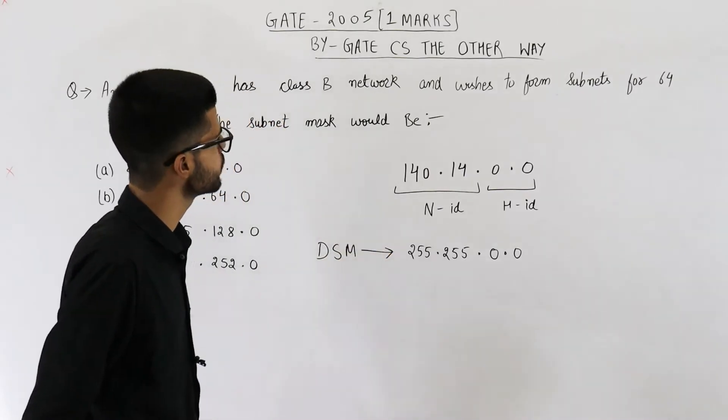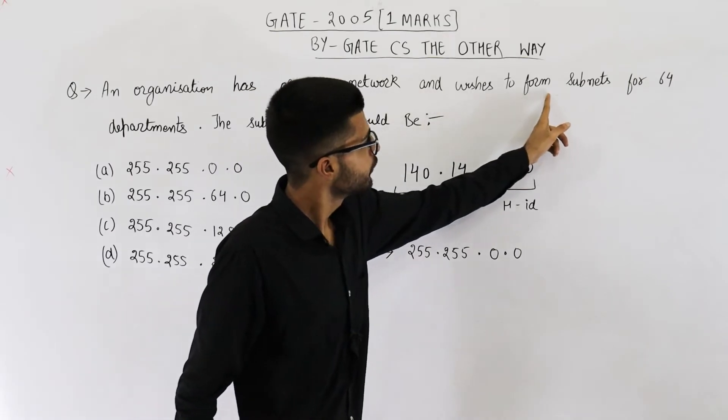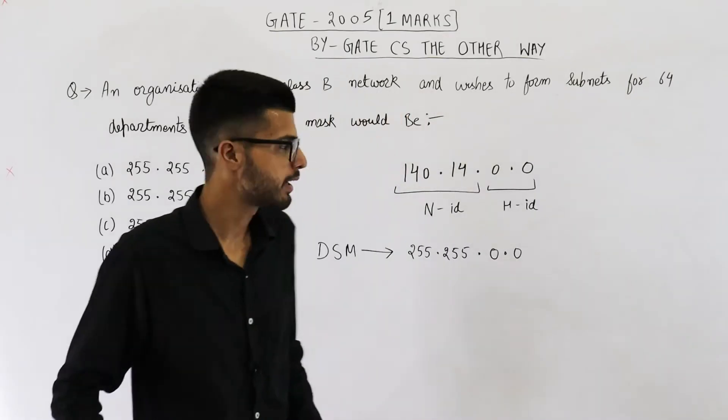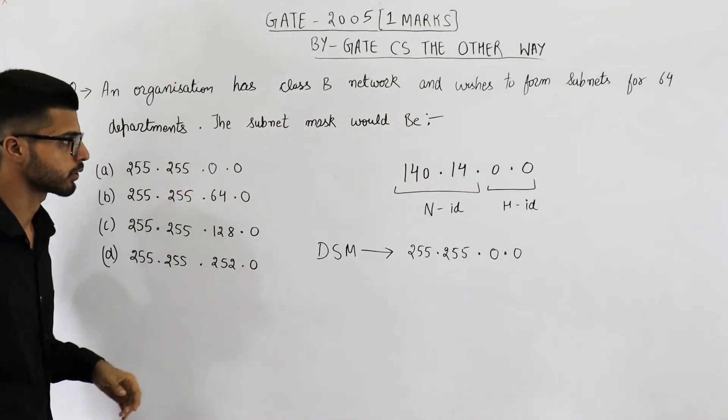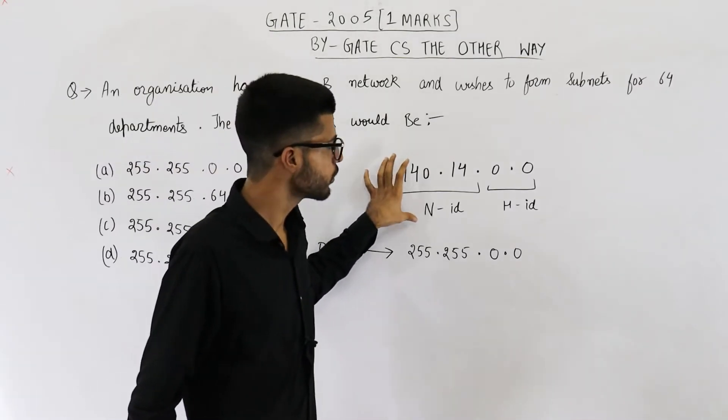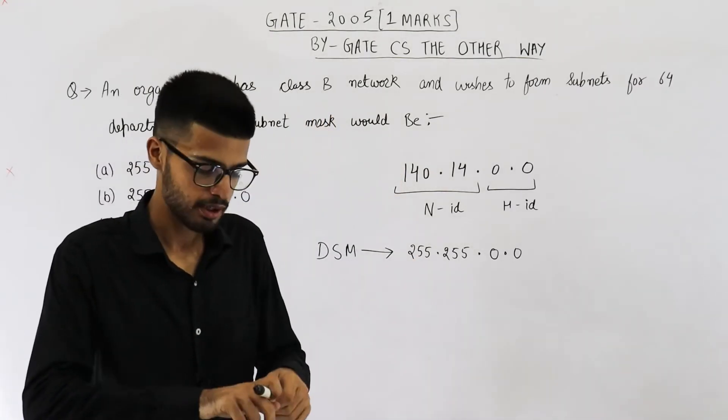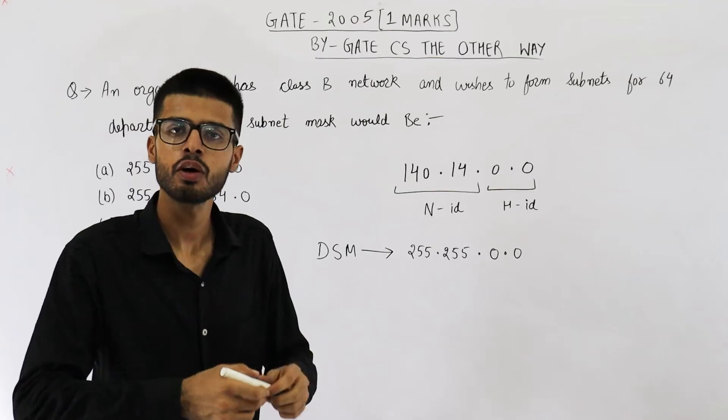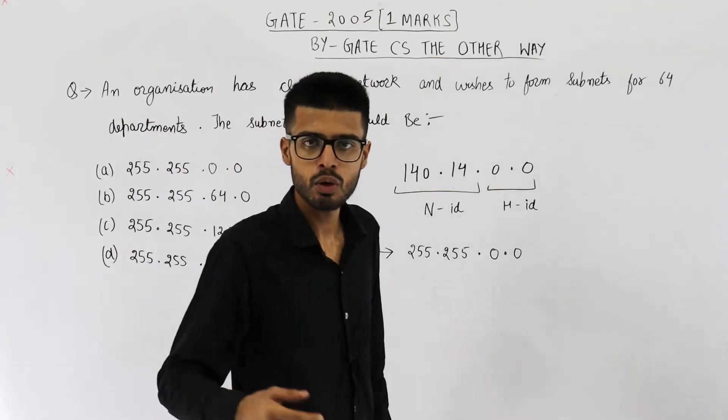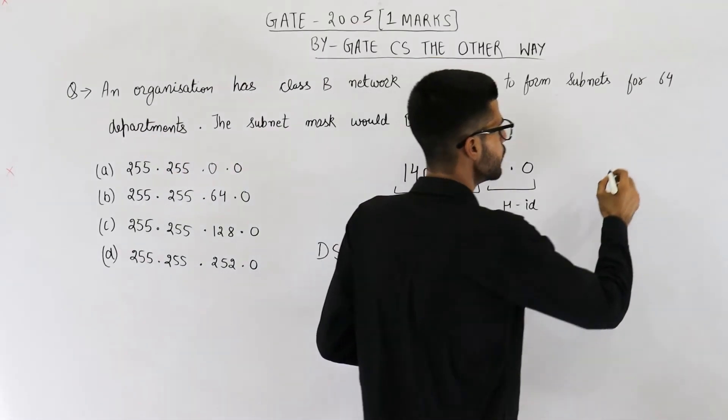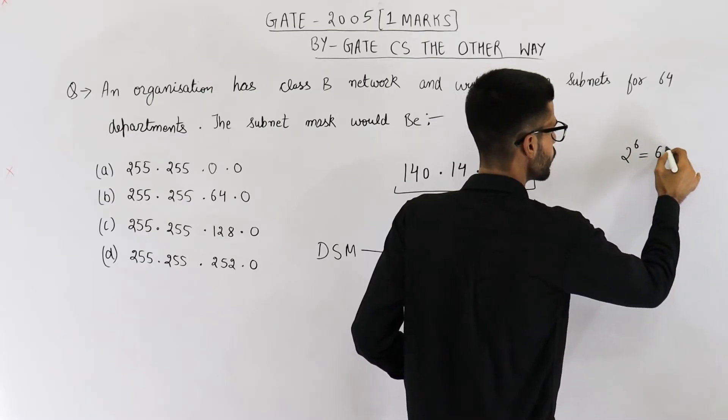Now let us see what they are saying. We want to form 64 subnets, one for each department. Now if you want to create 64 subnets, how many bits will be required for identifying one subnet? It will be six bits because 2 raised to the power 6 is 64.